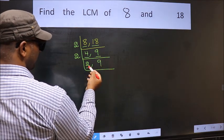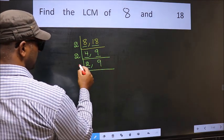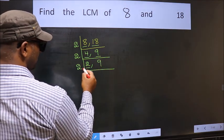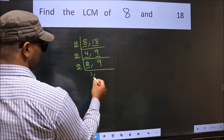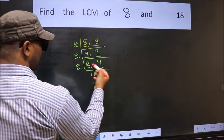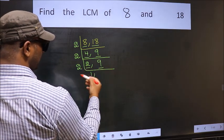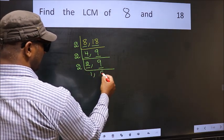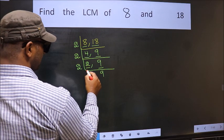Now here we have 2. 2 is a prime number, so 2 ones are 2. The other number 9 is not divisible by 2, so we write it down as it is.